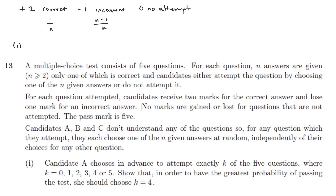Now in part one it says they're going to choose in advance to attempt exactly K of the questions, and what's the best possible choice of K here — the pass mark is five marks, so we need to score five marks out of these K questions.